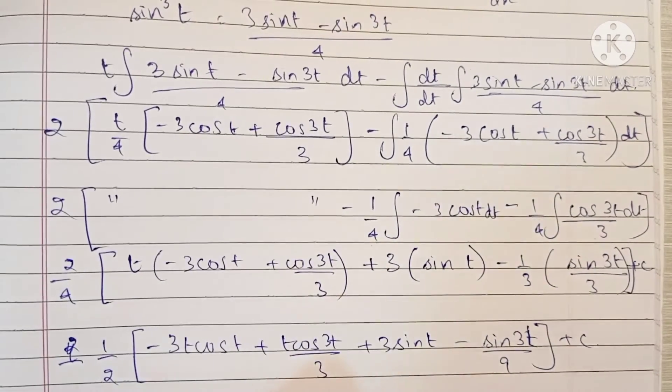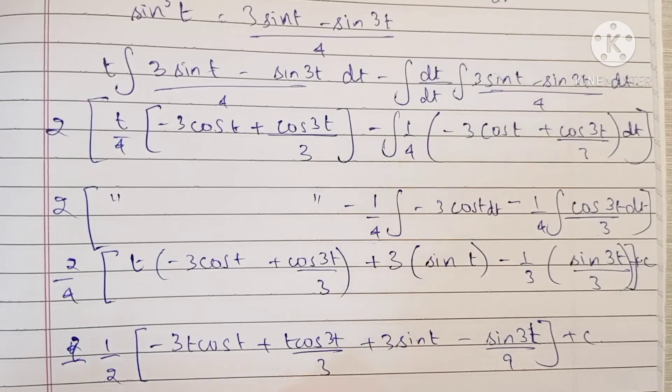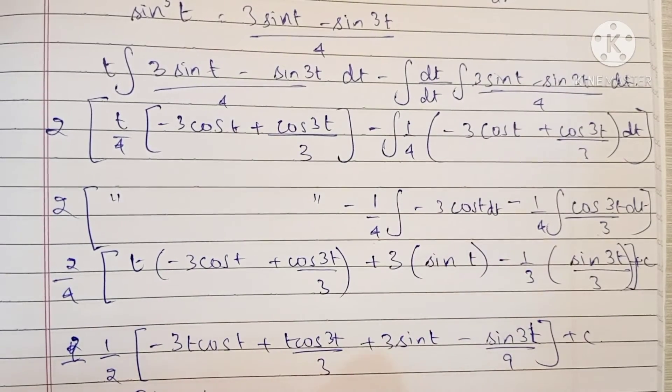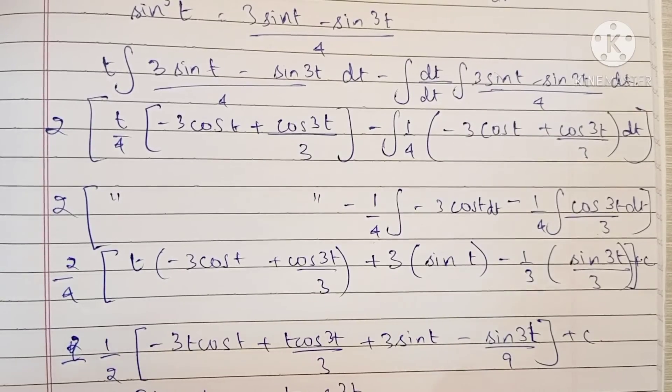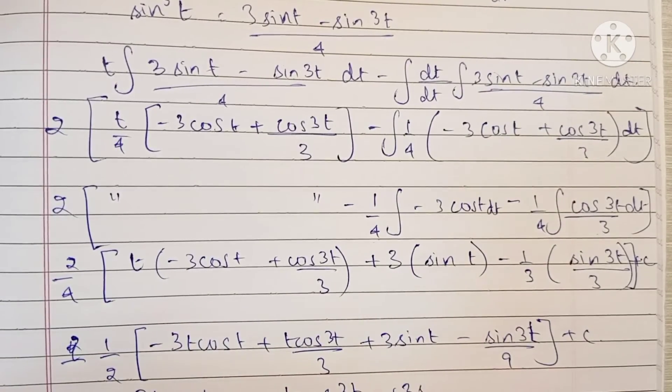Plus c, and then take it out of the bracket: minus 3t cos t upon 2, plus t cos 3t upon 6, plus 3 sin t upon 2.